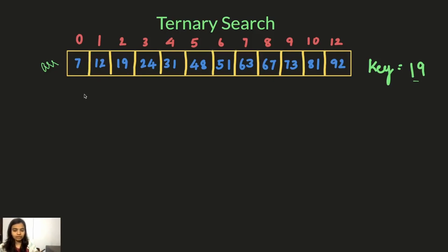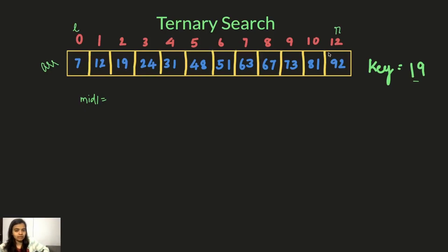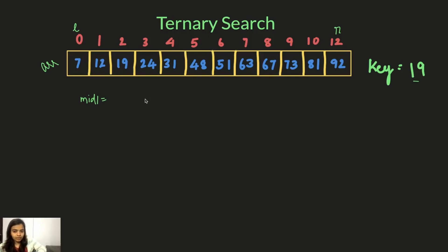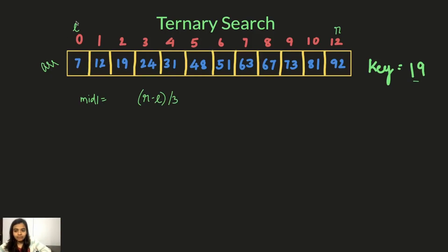To find mid1 and mid2 we have a formula. This is our left index and this is our rightmost index. The length of the array is right minus left — so 12 minus 0 gives 12 elements. We divide by three because we want to split into three parts, and we add the left index, so the formula for mid1 is: left + (right − left) / 3.